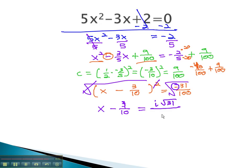Square root of 100 is 10. Don't forget the plus or minus whenever we take the square root of both sides. To get x alone, we just have to add 3/10.